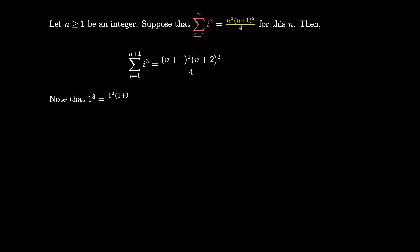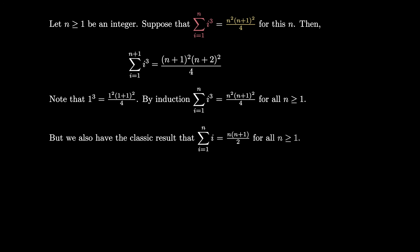Note that we can also check that the formula holds when n equals 1, and therefore we've proved by induction that the sum where i ranges from 1 to n of i cubed is equal to n squared times (n plus 1) squared divided by 4 for all n greater than or equal to 1. We also have the classic result that the sum of the first n positive integers is equal to n times (n plus 1) divided by 2 for all n greater than or equal to 1.